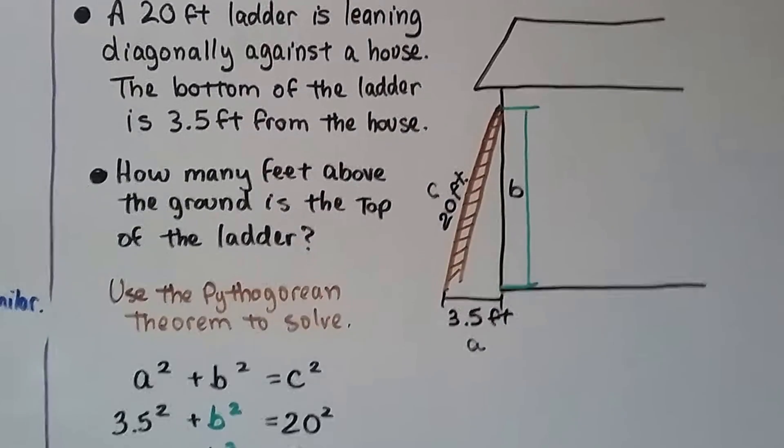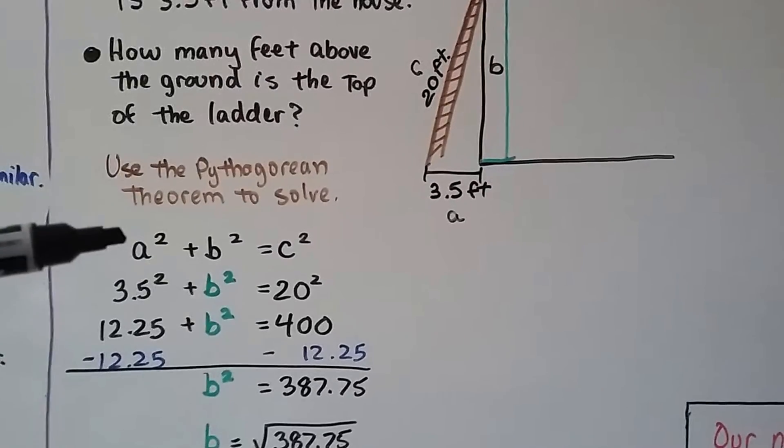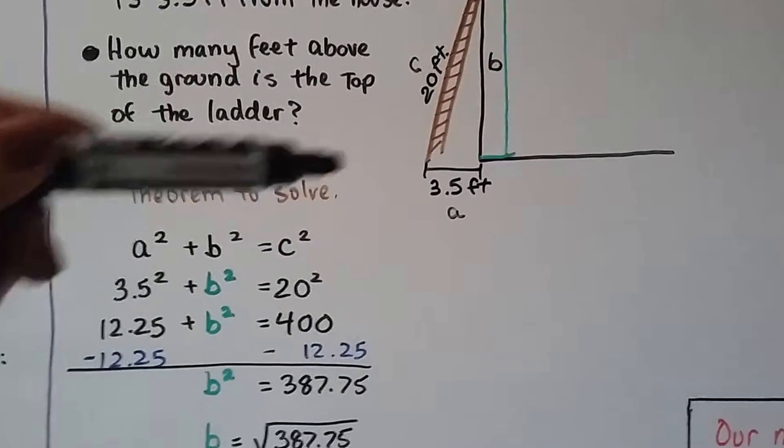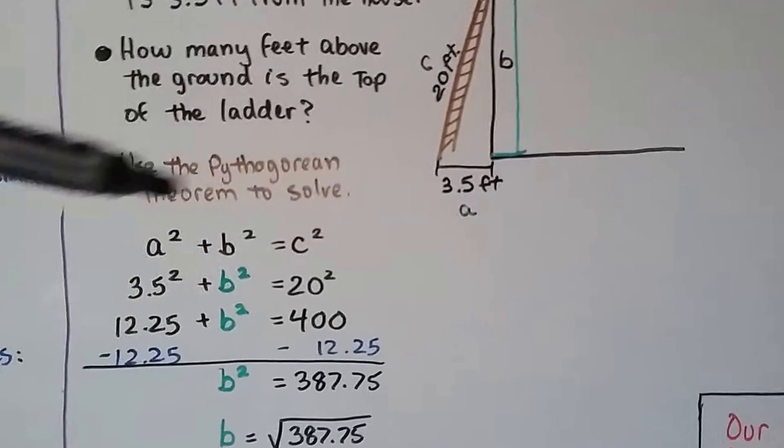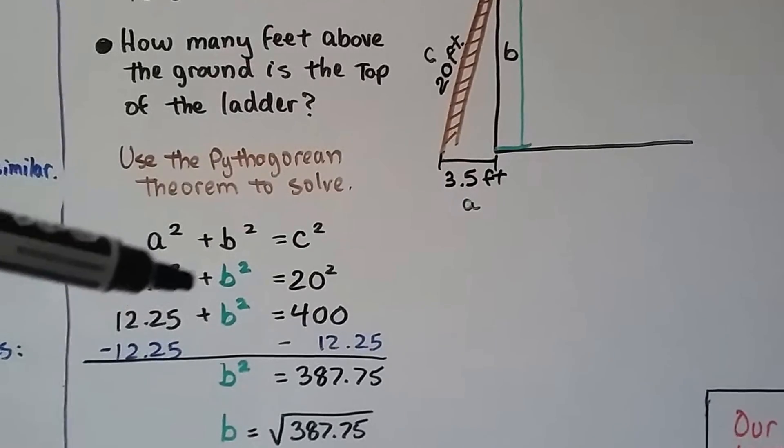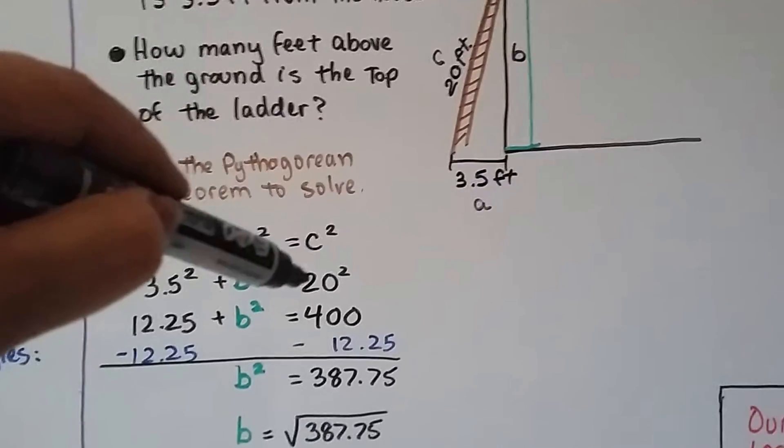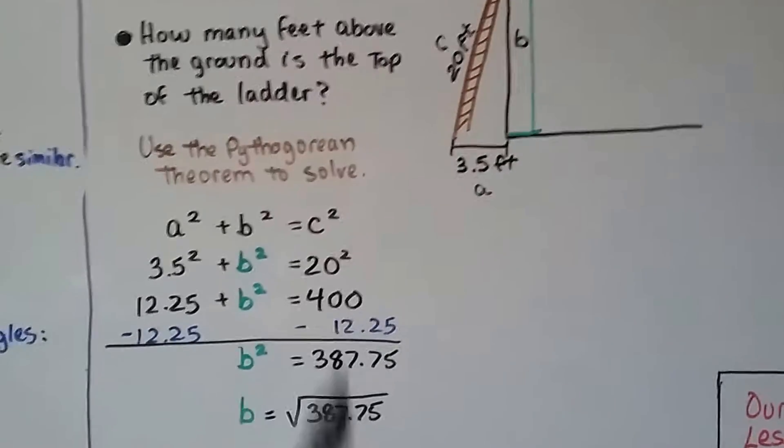So we need B. So we're going to use the Pythagorean theorem to solve it. We've got a squared plus b squared equals c squared. And we know this is 3.5. That's our A. So we've got 3.5 squared. That's 12.25. Then we've got our b squared because we don't know what it is. And c squared would be 20 feet squared, wouldn't it? 20 squared. That's 400.